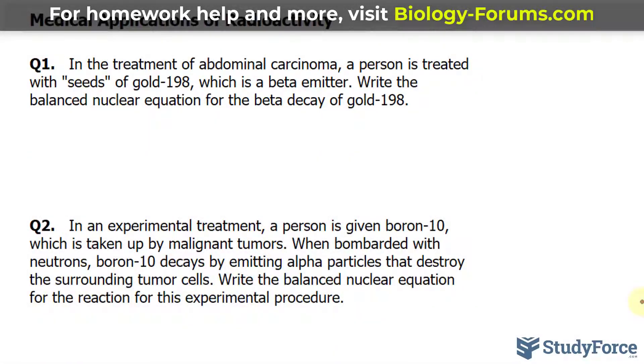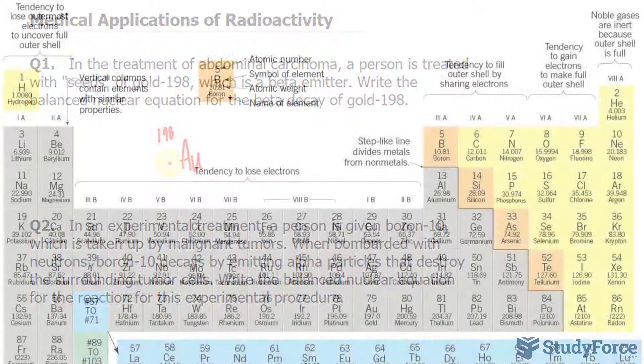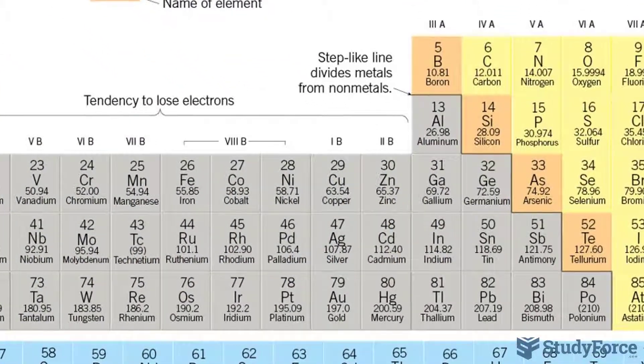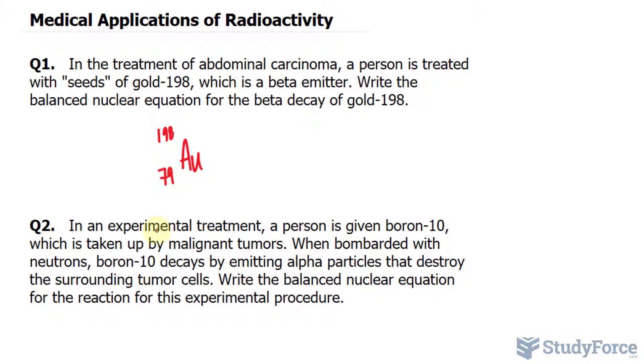To write the nuclear equation, we'll begin with the elemental symbol for gold, which is Au, and we're told that the atomic mass of this isotope is 198. Gold happens to be the 79th element on the periodic table, so I'll write down 79 in the subscript position.